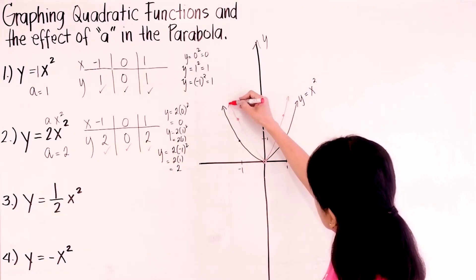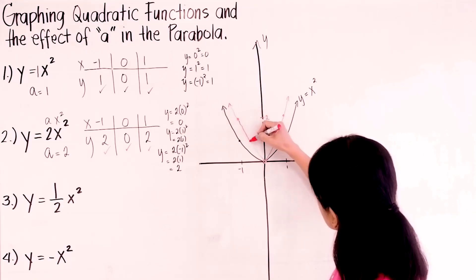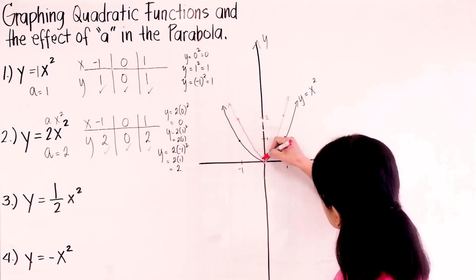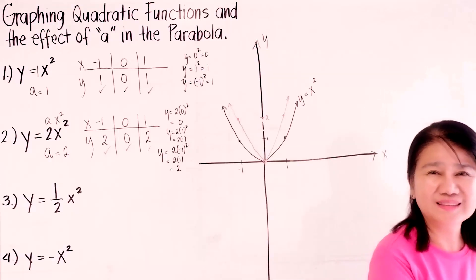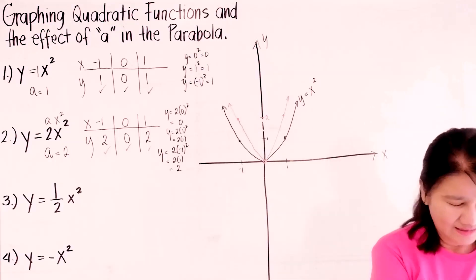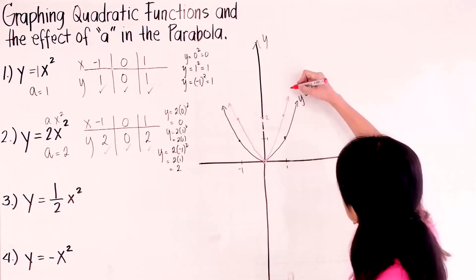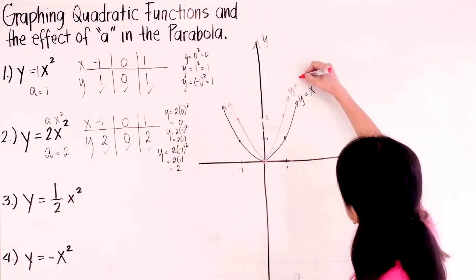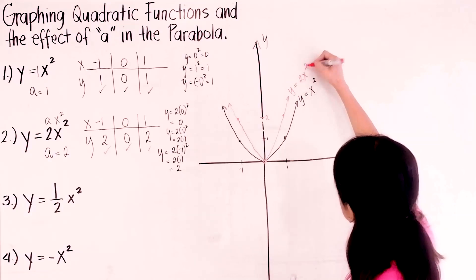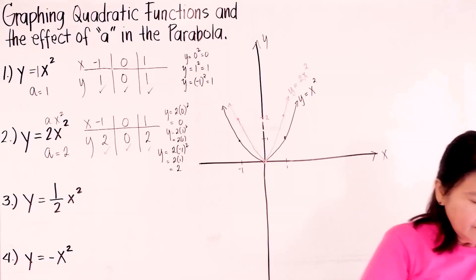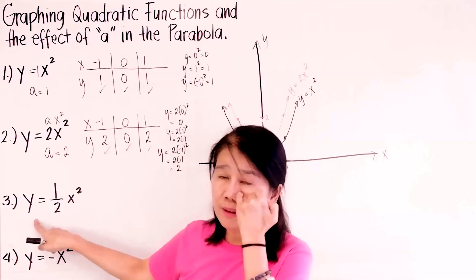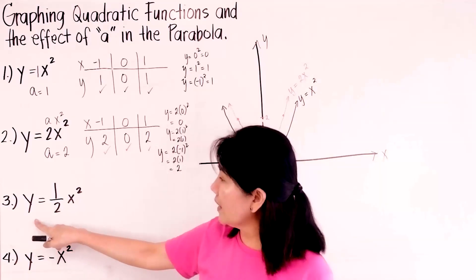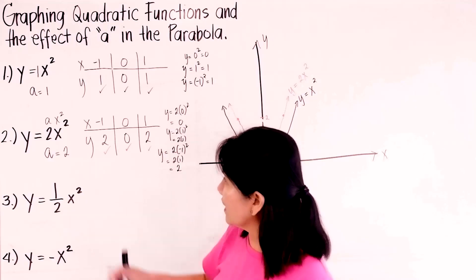Did you observe anything? Now let us write the function here: y equals 2x squared. If we move to problem number 3, y equals 1 half x squared.